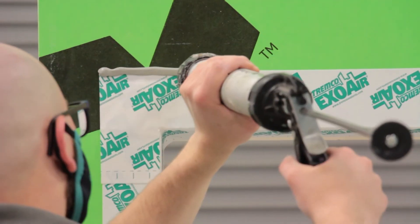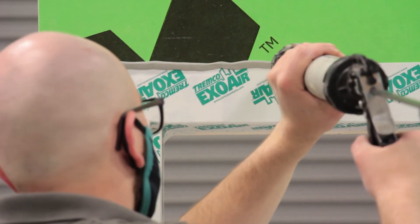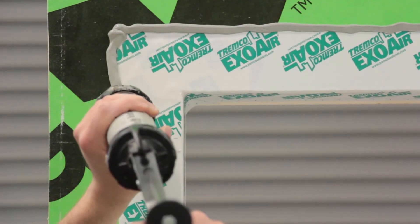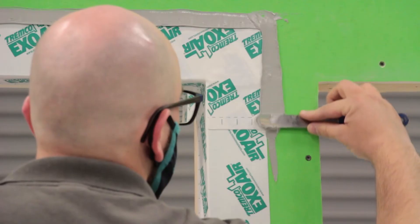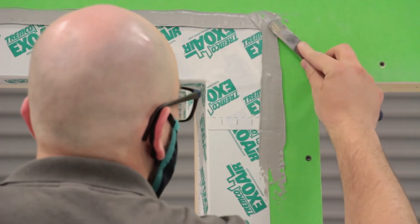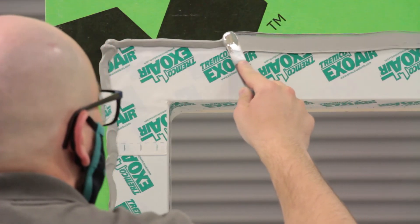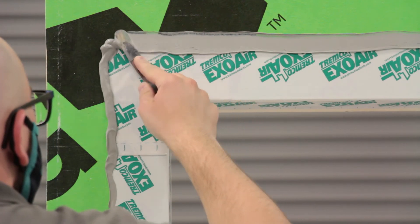Detail the top edge with Deimonic 100 and extend down each jam a minimum of six inches. Be sure to tool and feather the edges of sealant to shed water.